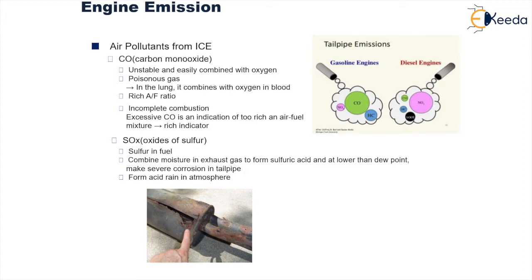Then we have oxides of sulfur. Sulfur dioxide and different oxides of sulfur are formed when traces or certain amounts of sulfur are present in the hydrocarbon fuel. When it is subjected to oxidation during combustion, this sulfur combines with oxygen resulting in the formation of oxides of sulfur. Also, it will combine with moisture present in the exhaust gas, resulting in the formation of sulfuric acid, which at lower than dew point will cause severe corrosion in the tailpipe. This also results in the formation of acid rain in the atmosphere.